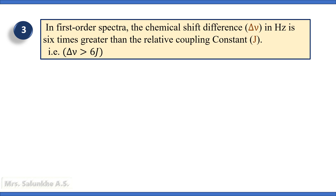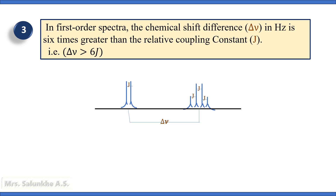The third criteria is that in first order spectra, the chemical shift difference, that is delta nu in hertz, is 6 times greater than the coupling constant J. J is the distance between two peaks within the multiplet, and that distance is always constant. The difference between chemical shift in hertz is delta nu. In case of first order spectra, delta nu divided by J is greater than 6. This is a very important criteria for first order spectra.